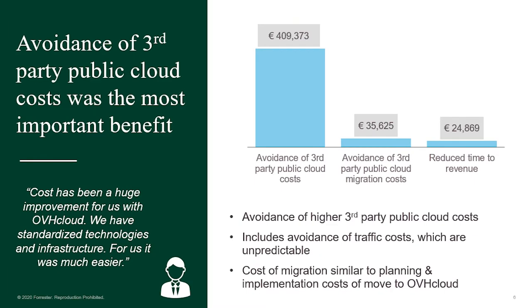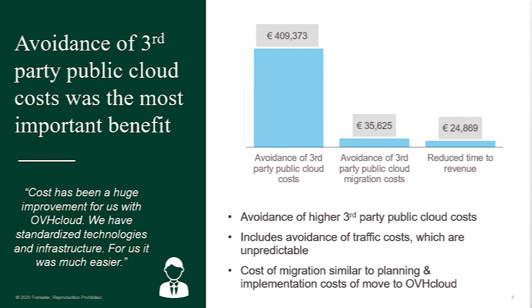The biggest benefit is therefore cost related. The third-party public cloud cost would have been much higher. These costs also include the cost of traffic, which is unpredictable and so more difficult to plan. As the customer mentioned, there were no hidden costs and OVH Cloud doesn't charge them for ingress or egress, so it was very easy to analyze the cost for any project for monitoring clients.